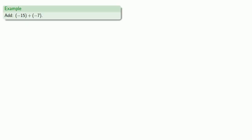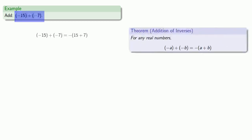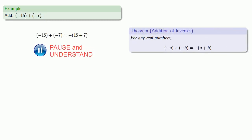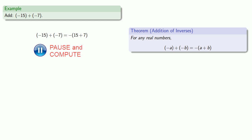So, for example, the additive inverse of 15 plus the additive inverse of seven — since they're both additive inverses, I can add the 15 and the seven together and take the additive inverse of the sum.